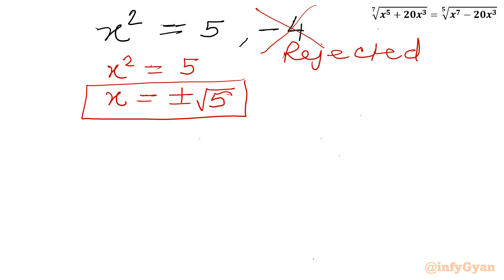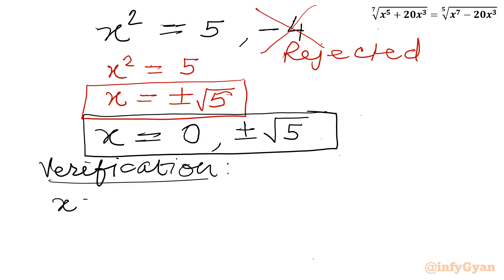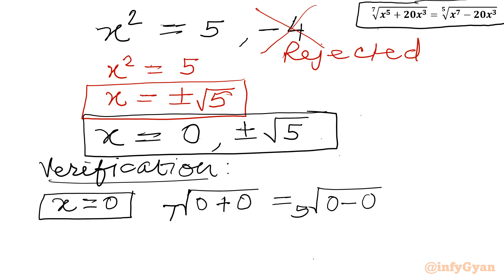Since x² equal to negative 4 gives complex solutions, it is rejected. Accepting x² equal to 5 and taking square roots gives x equal to plus or minus √5. So our three real solutions are: x equal to 0 with multiplicity 3, and x equal to plus or minus √5. Let us verify. For x equal to 0: the LHS is 7th root of 0⁵ plus 20 times 0³, which is 0. The RHS is 5th root of 0⁷ minus 20 times 0³, which is also 0. So 0 equal to 0 — solution verified.